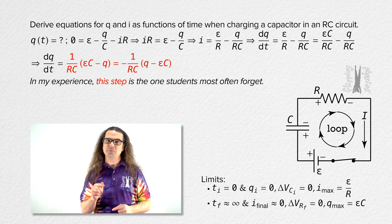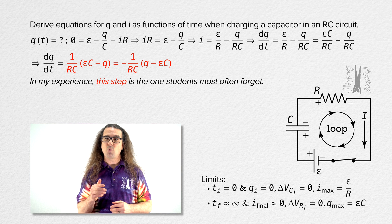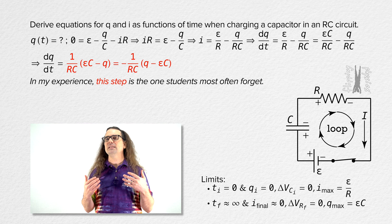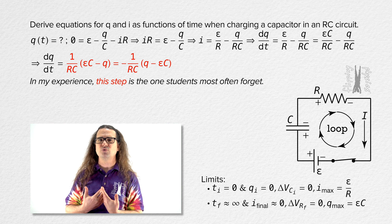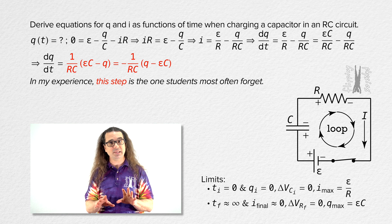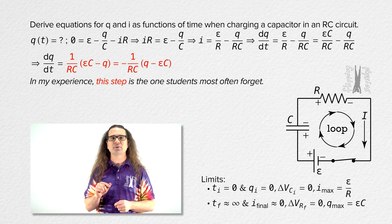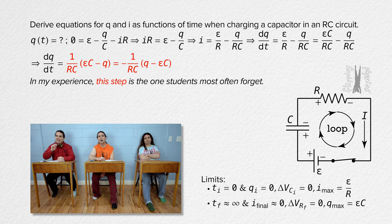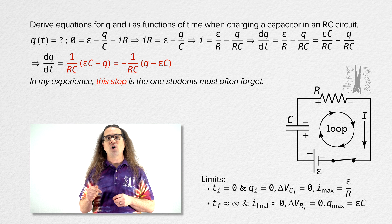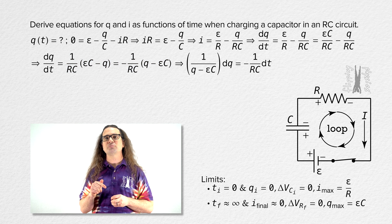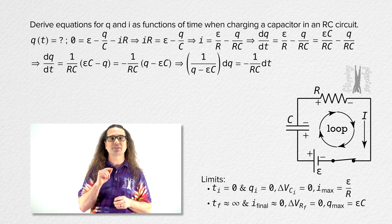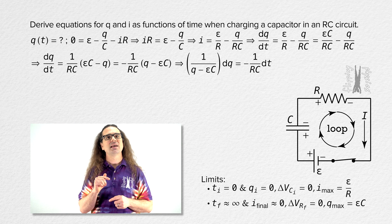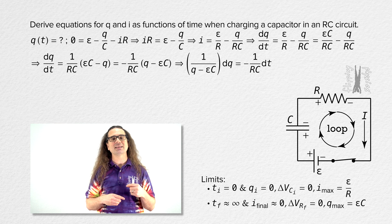I want to point out that the step where we factor out negative 1 from the parenthetical expression on the right-hand side is the one step students most often forget, so please remember to do that. Next, we divide the whole equation by the quantity charge minus EMF times capacitance, and multiply the whole equation by dt.